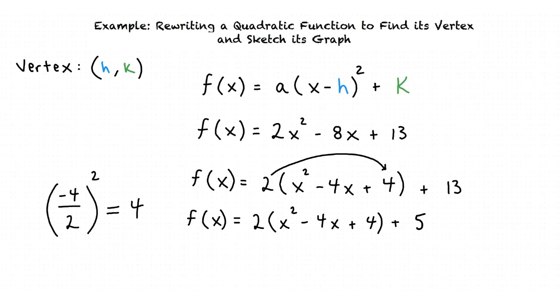Finally, we factor the trinomial inside the parenthesis. The result is f(x) = 2(x - 2)² + 5.